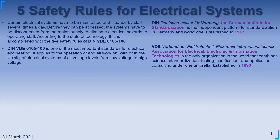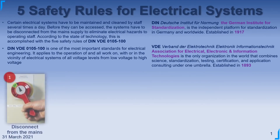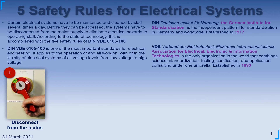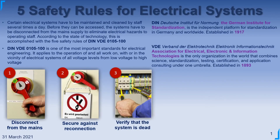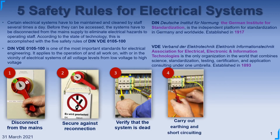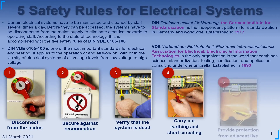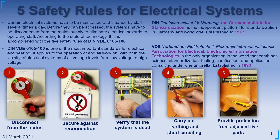Here are the five rules before beginning the work. Rule one: Disconnect from the mains. Rule two: Secure against any reconnection possibilities. Rule three: Ensure zero voltage, or verify the system is dead. Rule four: Carry out earthing and short circuiting. Rule five: Provide protection from adjacent live parts.